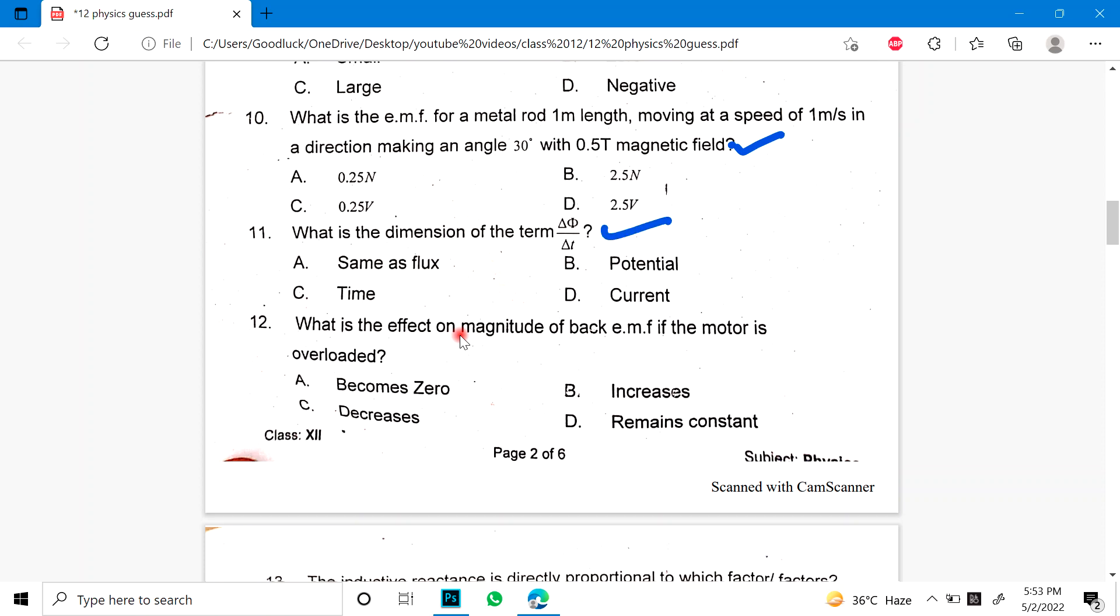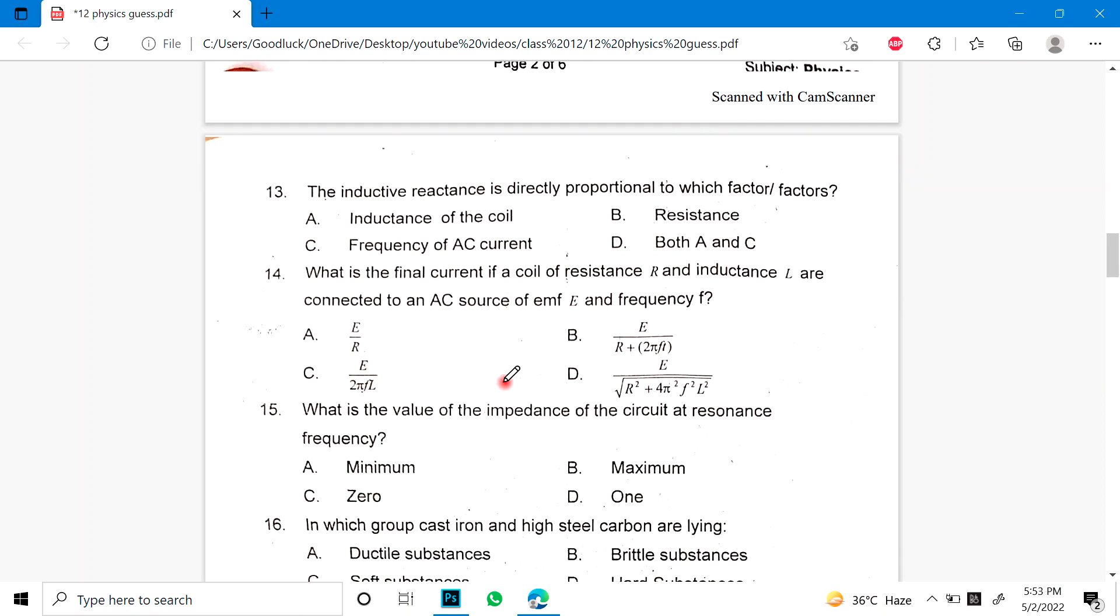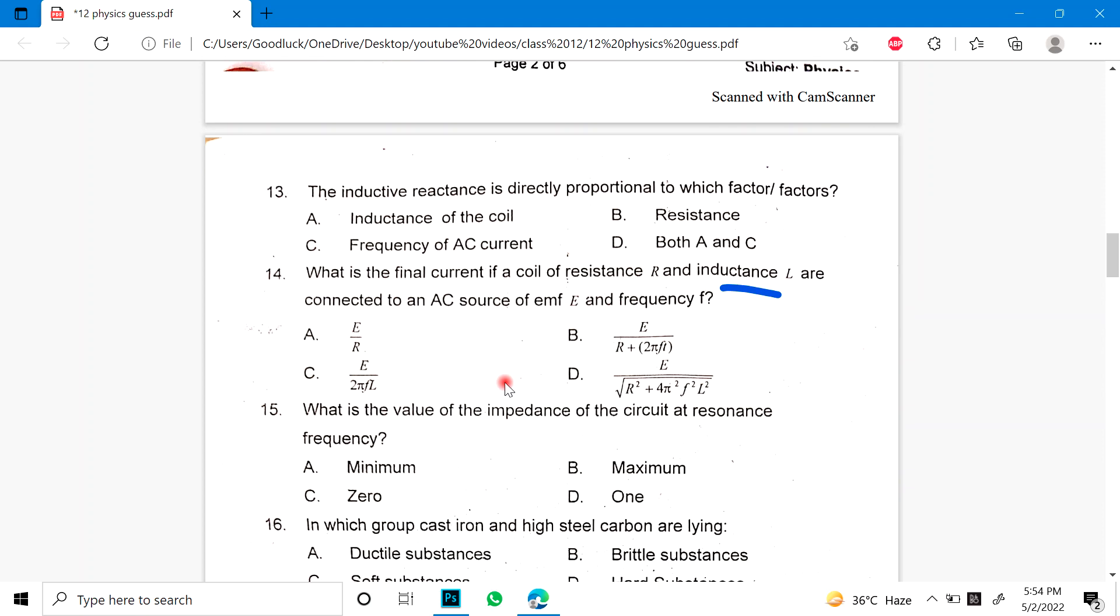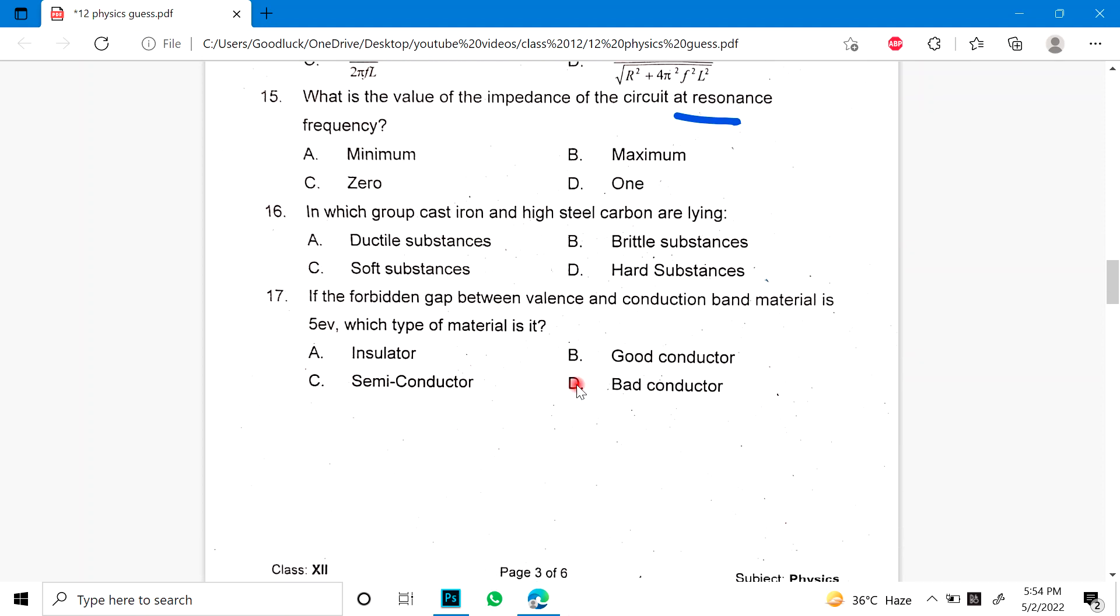11th: What is the dimension of this? This is potential I think. 12th: What is the effect on magnitude of back EMF if the motor is overloaded? 13th: The inductive reactance is directly proportional to which factors? 14th: What is the final current if a coil of resistance and inductance L are connected to an AC source of EMF E and frequency? 15th: What is the value of impedance at resonance frequency? 16th: In which group cast iron and high steel carbon are lying? And last: If the forbidden gap between valance and conduction band material is 5EV, which type of material it is.